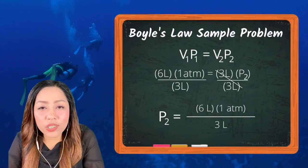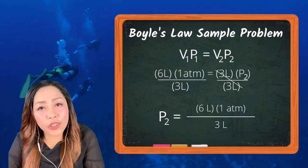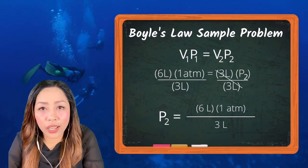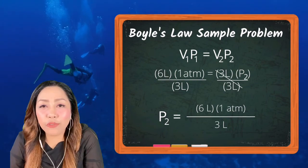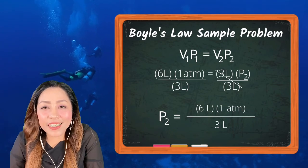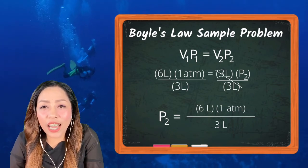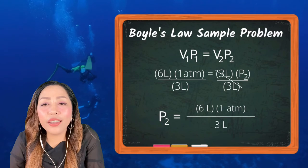Now, we will be dividing both sides by 3 liters for us to be able to solve for our unknown. And so, now we'll have P₂ is equal to 6 liters times 1 atmosphere divided by 3 liters.